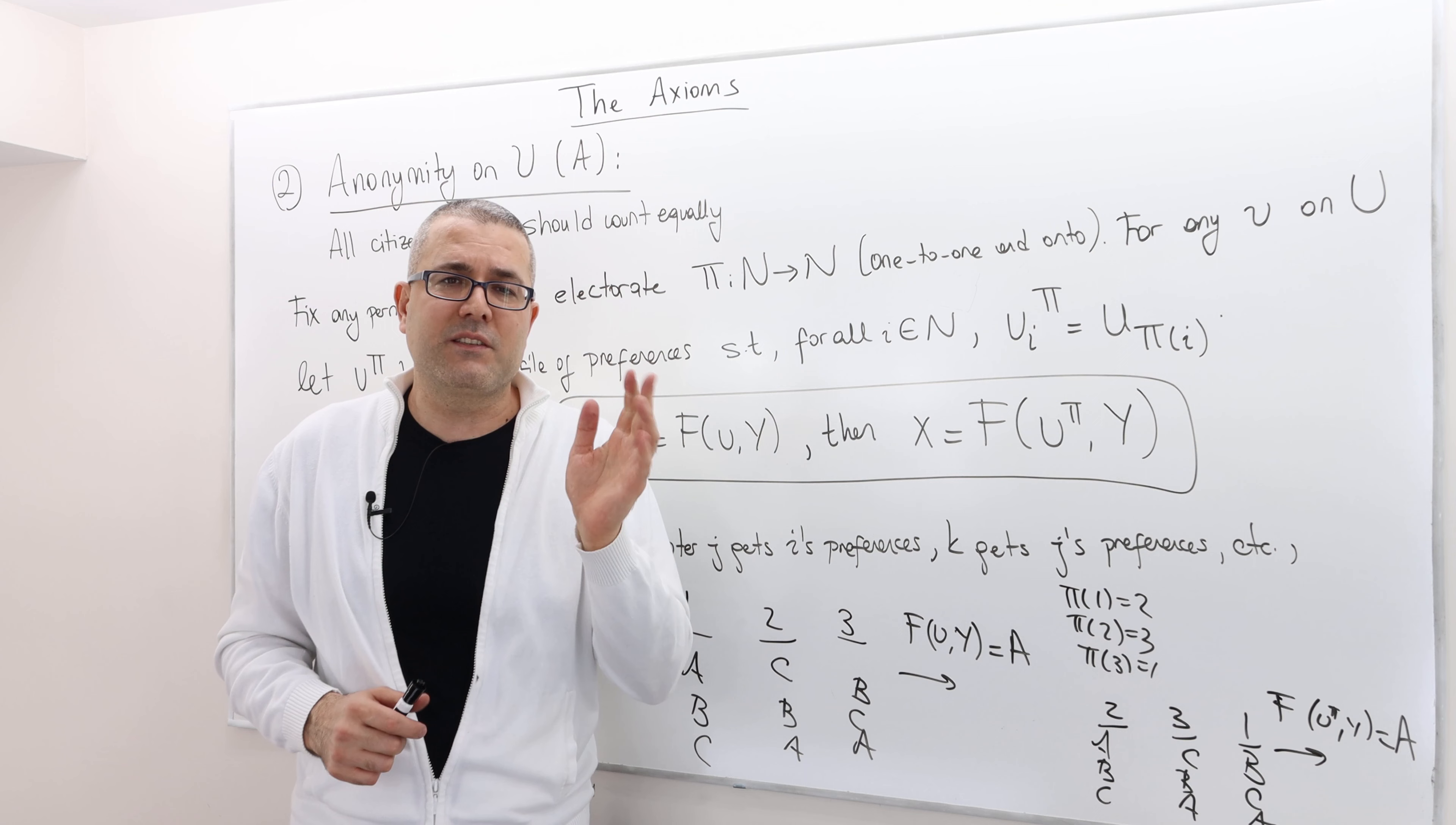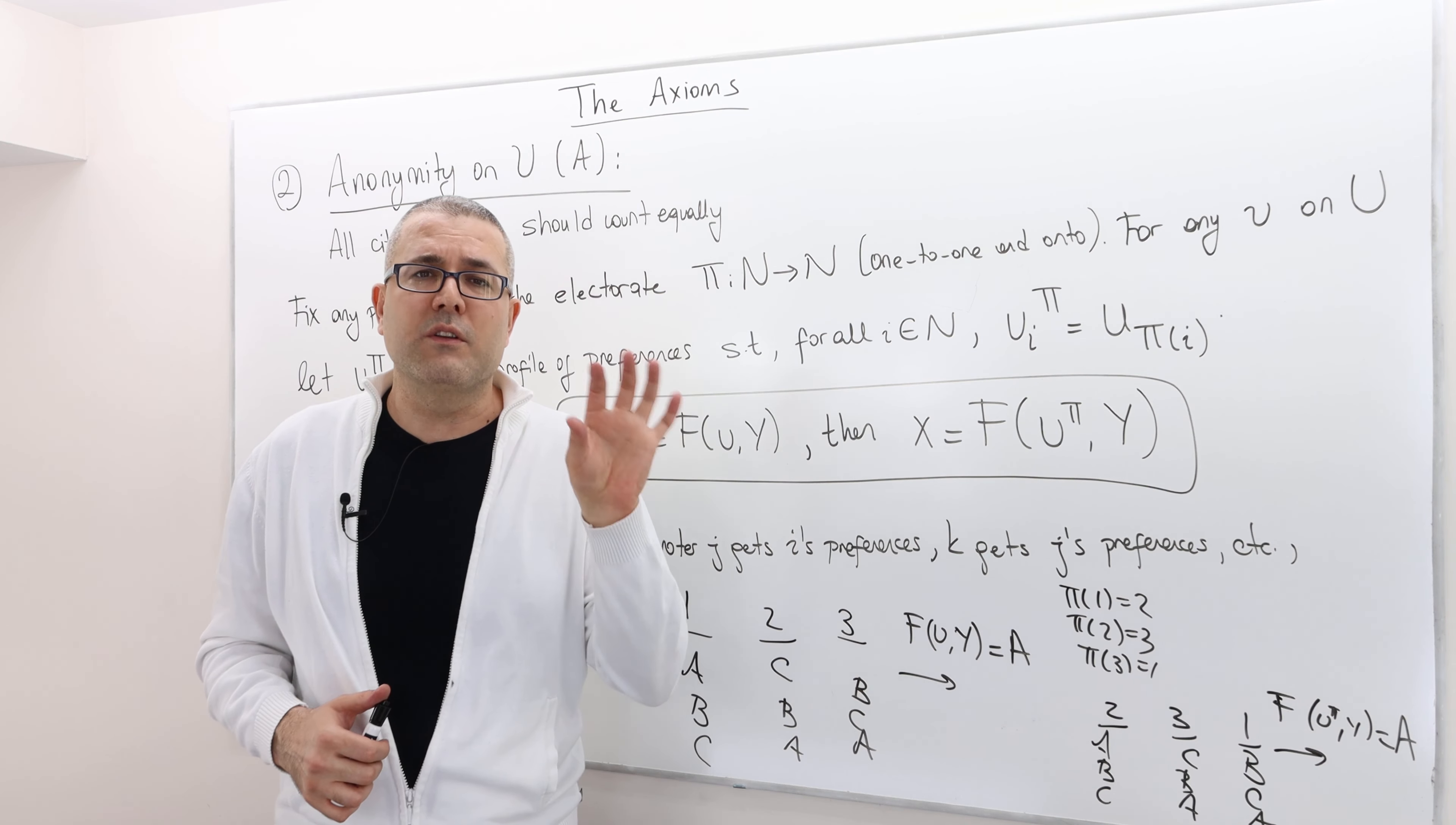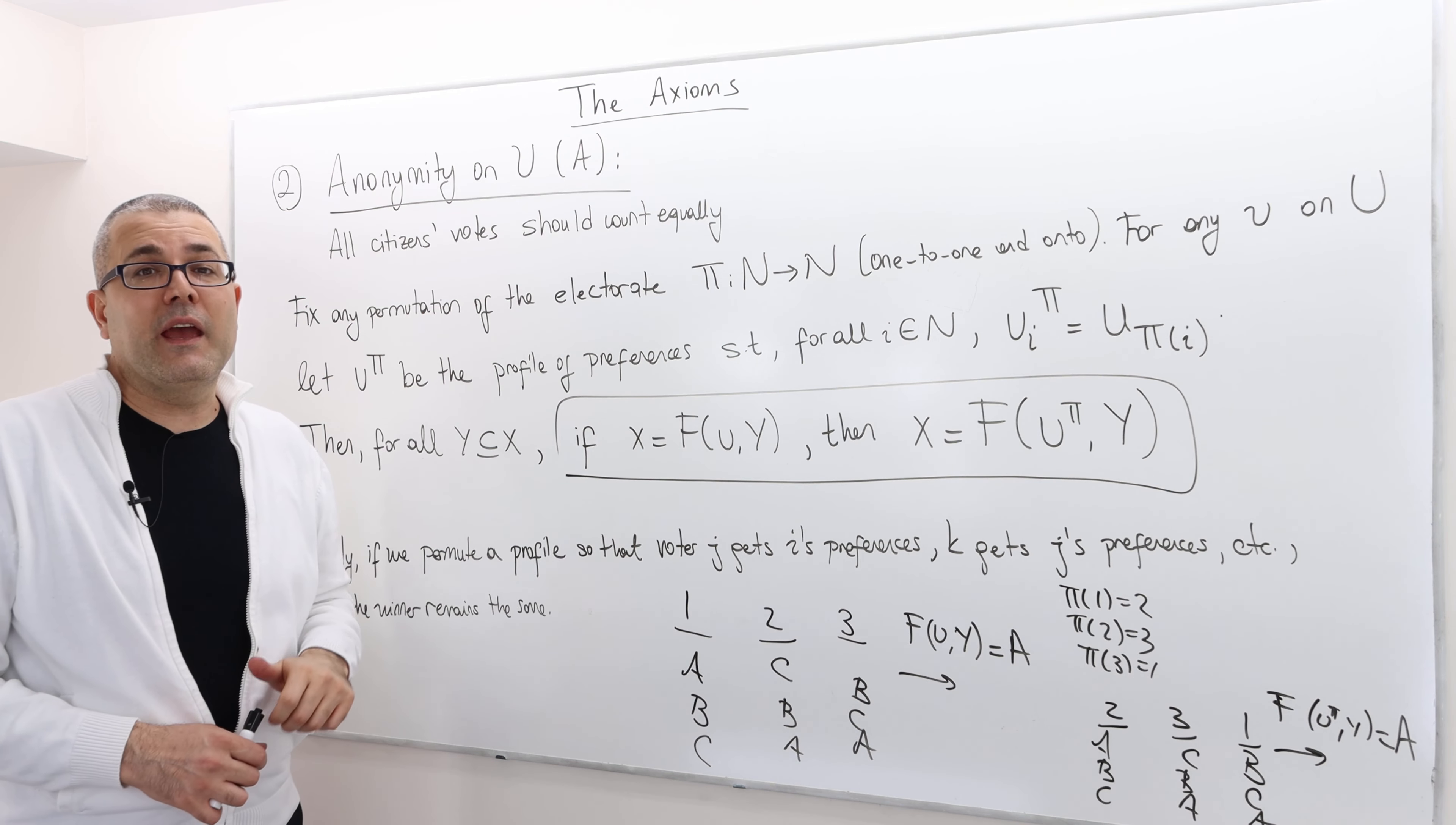So, you know, if your rule choice rule is something like this, well, then this clearly violates anonymity because it actually does give special importance or focus on some voters and not others. So this is what anonymity is. And as I said, I'm going to refer to this for the rest of this chapter as axiom A.